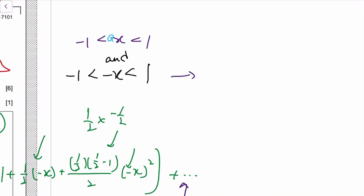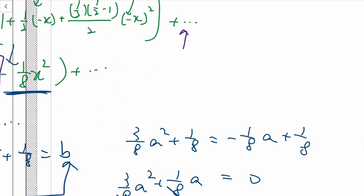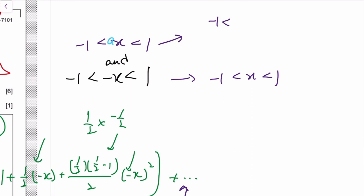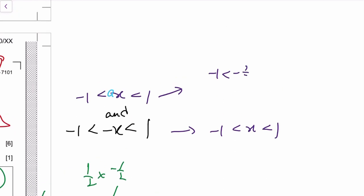But obviously if negative x is between negative 1 to 1, then x is simply between negative 1 to 1. For this one, a was negative 1 third, so it's negative third x. If negative third x is between negative 1 to 1, then x is between negative 3 to 3.